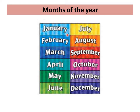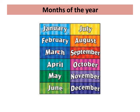How many months do we have in a year? We have 12 months in a year. Let's learn them: January, February, March, April, May, June, July, August, September, October, November, December. The first month is January and the last one is December. March comes before April and March comes after February.